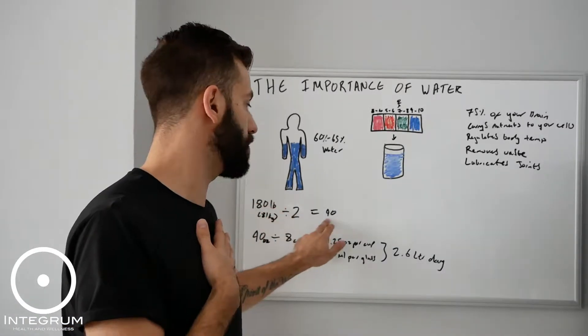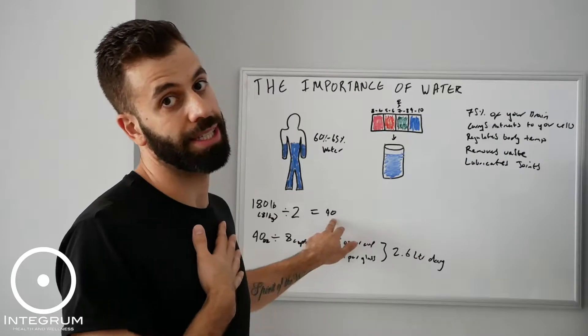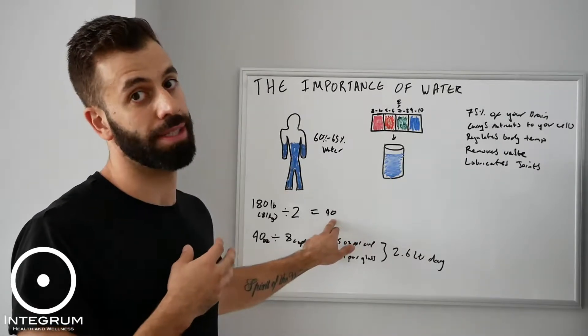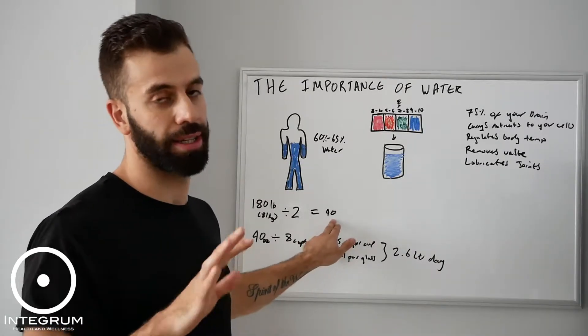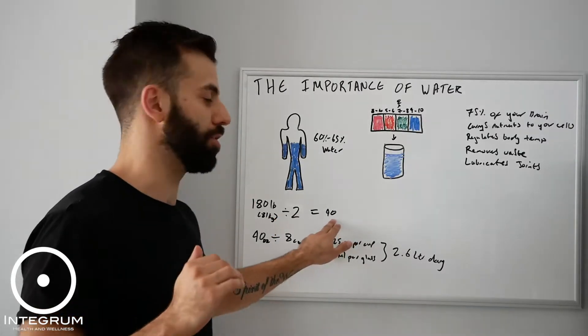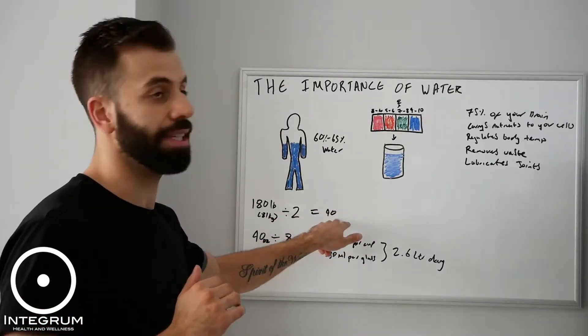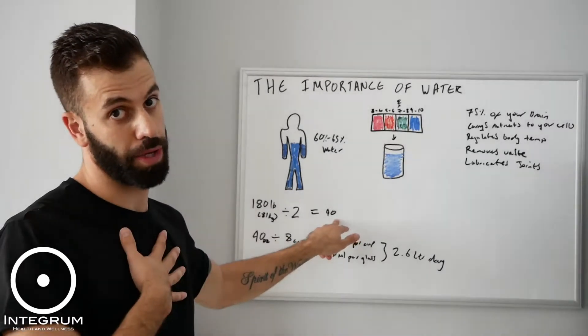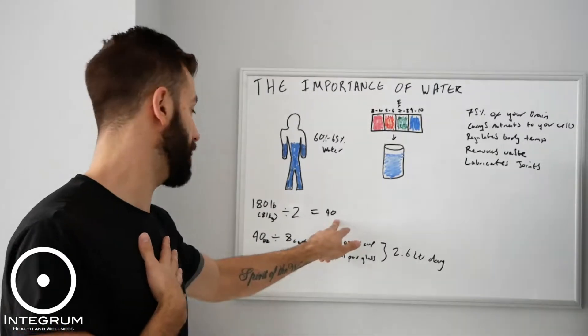That gets divided by 2 to give you 90. Now, 90 is the amount of fluid ounces per day that you should be drinking. Again, don't worry if you're working in milliliters. I'll explain that in just a second for you. So 90 is the amount of fluid ounces for my body weight that I should be consuming per day.